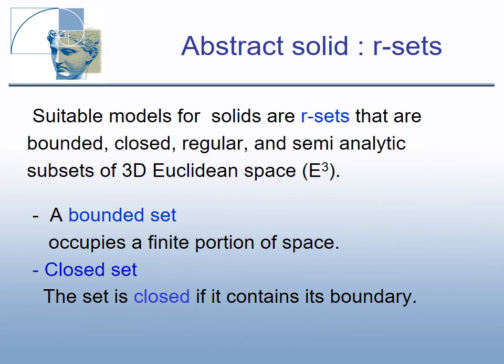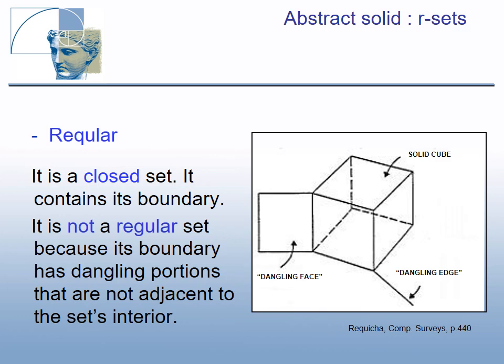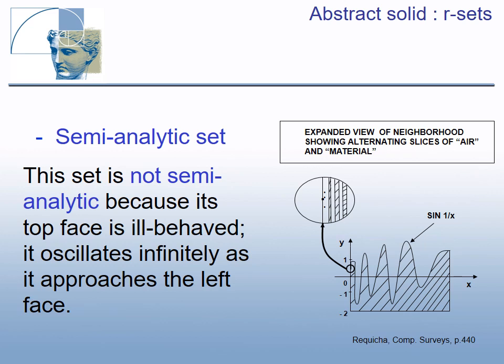A bounded set occupies a finite portion of space. The set is closed if it contains its boundary. Imagine a solid ball — remove its surface or a portion of it; such an object is not a closed set. A set is regular if, for any boundary point, any neighborhood contains both boundary and internal points. A set is not semi-analytic if its boundary oscillates infinitely near some line, making it numerically impossible to distinguish boundary, internal, and external points. Semi-analytic means a set with good behavior.